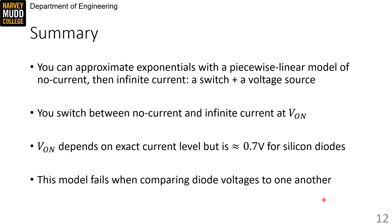So in summary, you can approximate exponentials with a piecewise linear model of no current and then infinite current. So the diode gets replaced by a switch plus a voltage source. You switch between the no current and infinite current states in the switch voltage source model at an applied voltage of VON.